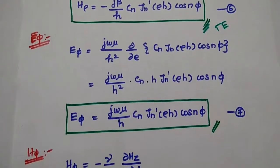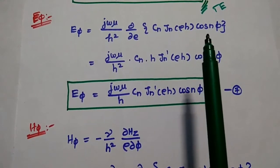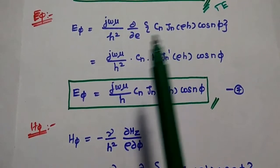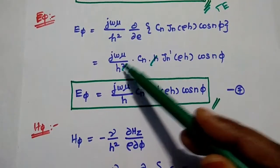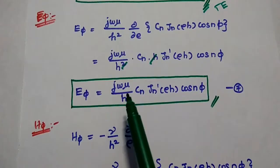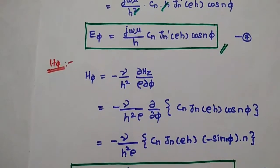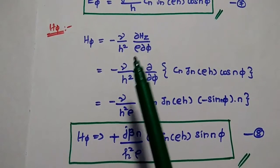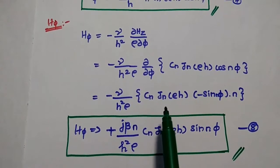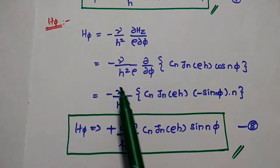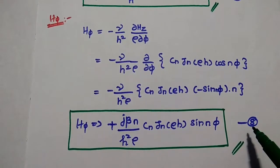Similarly, we find E_phi, which is equal to j*omega*mu by H² times (dou / dou rho) of Cn * Jn(rho*H) * cos(n*phi). Differentiating with respect to rho and simplifying H, we get E_phi equal to j*omega*mu / H * Cn * Jn'(rho*H) * cos(n*phi). That is the seventh equation. Finally, H_phi is equal to minus gamma by H² times (dou Hz / rho dou phi). Substituting Hz and differentiating with respect to phi, and replacing gamma with j*beta, we get H_phi equal to j*beta*n / (H²*rho) * Cn * Jn(rho*H) * sin(n*phi). Consider this as the eighth equation.